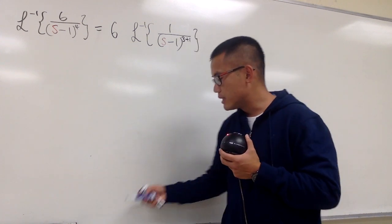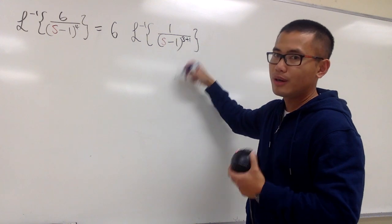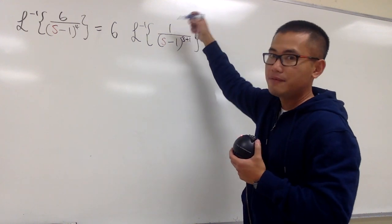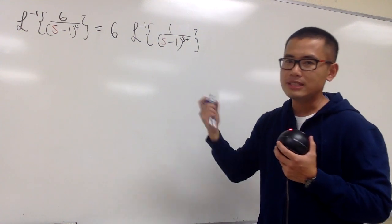And the reason that we do this, it's because whenever we have something to the n plus 1 power, as long as the top is n factorial, then we know what that is. It's going to be t to the n's power.